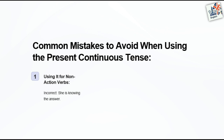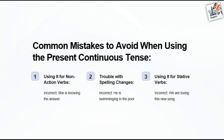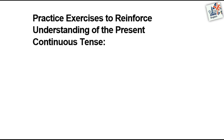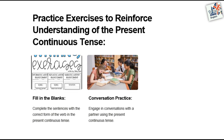Common mistakes to avoid when using the present continuous tense. One — using it for non-action verbs. Incorrect: She is knowing the answer. Two — trouble with spelling changes. Incorrect: He is swimming in the pool. Three — using it for stative verbs. Incorrect: We are loving this new song.